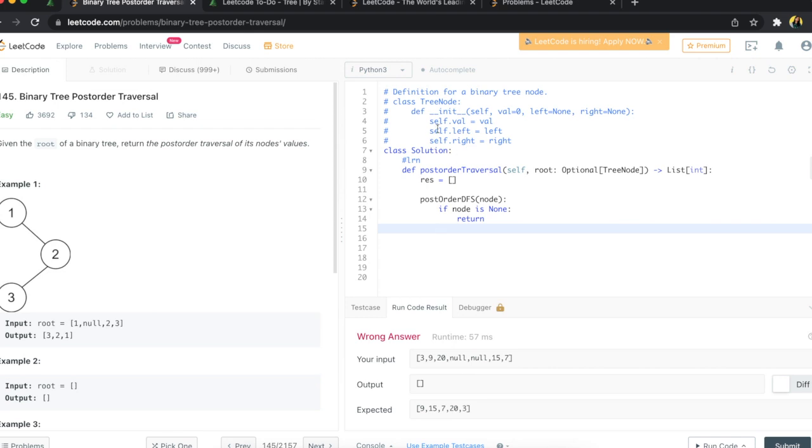Because this is the order: left, right, and the node. So we will call this postorder DFS and then we will send it the node.left. And then after that we'll do the same thing, but we are going to send the right side of that node. So we'll say node.right. And then finally we are going to add to our result. So we will say res.append and we will put in that node's value, so node.val. And lastly we are going to return res.